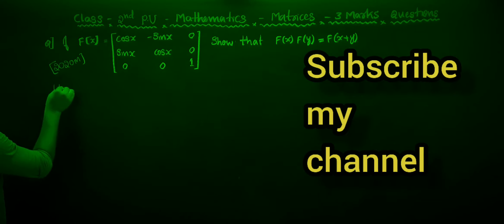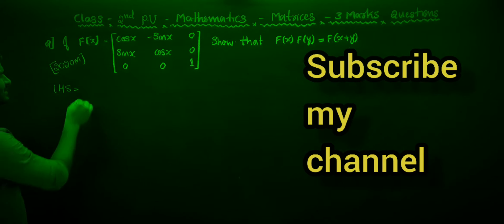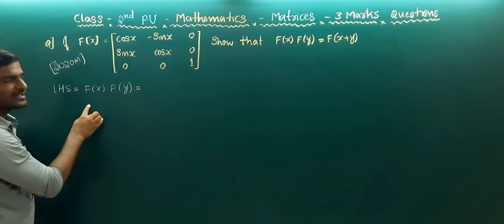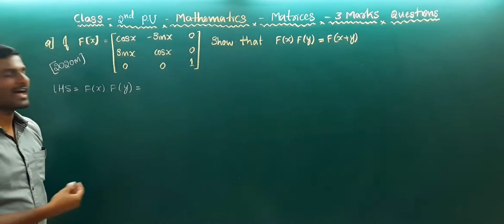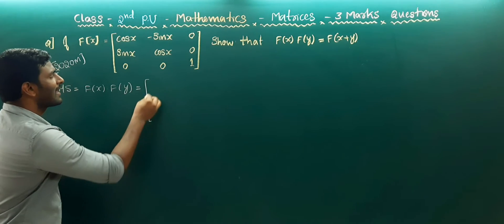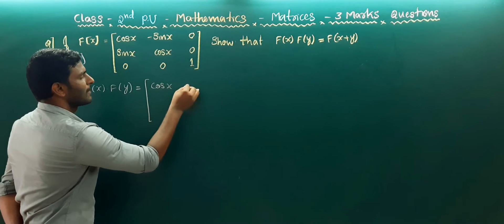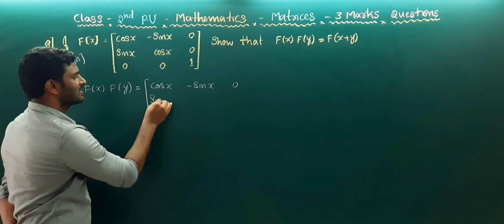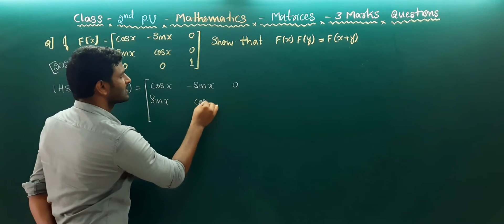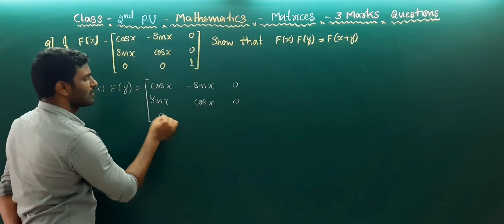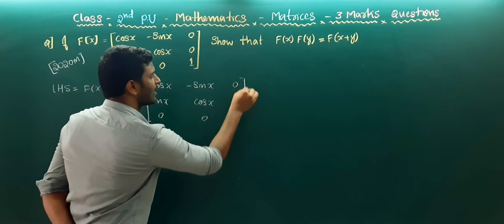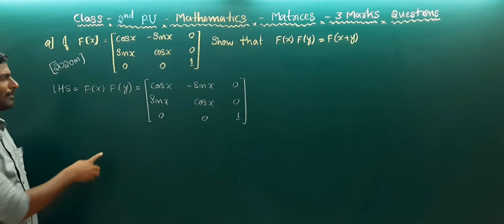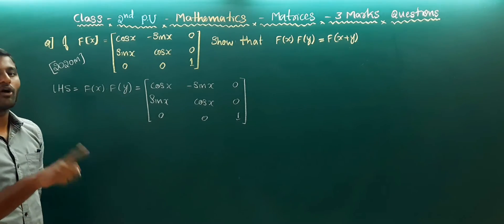Let us take the left hand side. So the left hand side is f(x) into f(y). The f(x) matrix is given: [cos x, -sin x, 0; sin x, cos x, 0; 0, 0, 1]. But the f(y) matrix is not given.